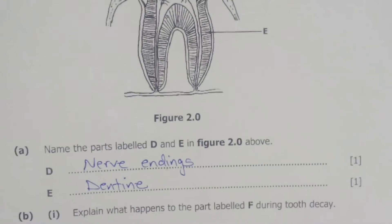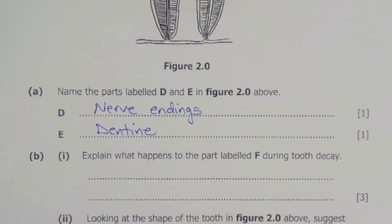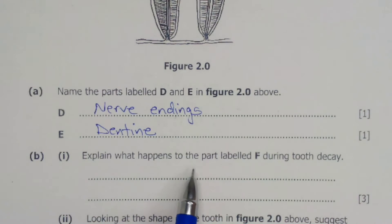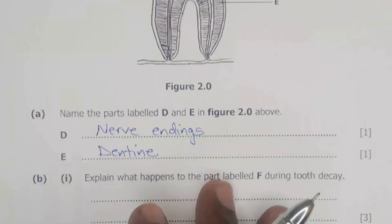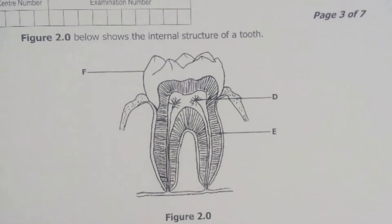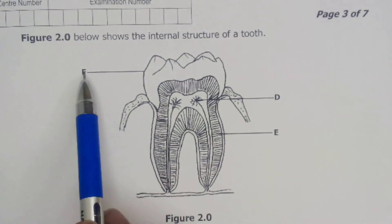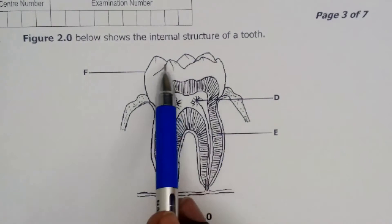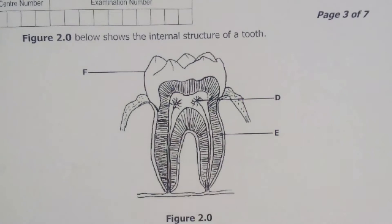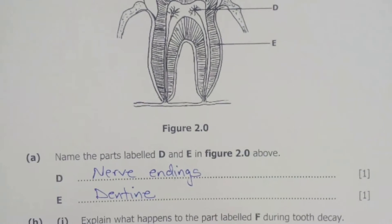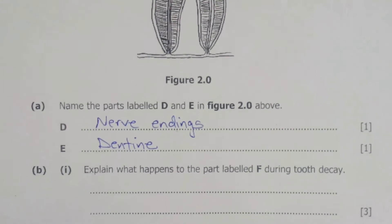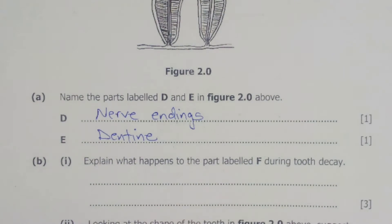The next part of the question is B1, which says explain what happens to the part labeled F during tooth decay. We mentioned earlier that part F is the enamel. The enamel will actually be attacked by bacteria as it is feeding on leftover food between the teeth by producing acid.